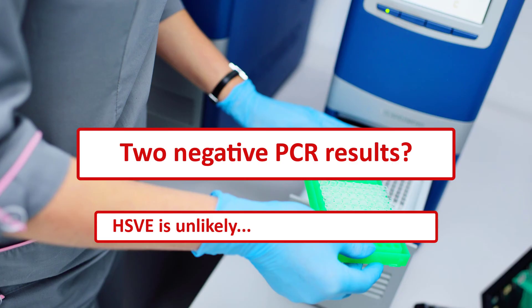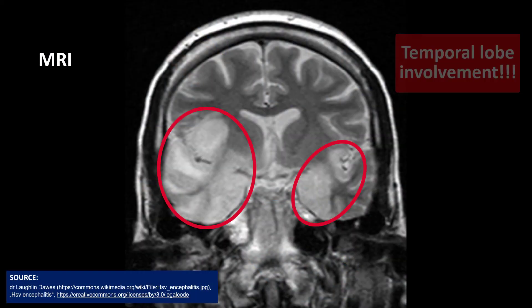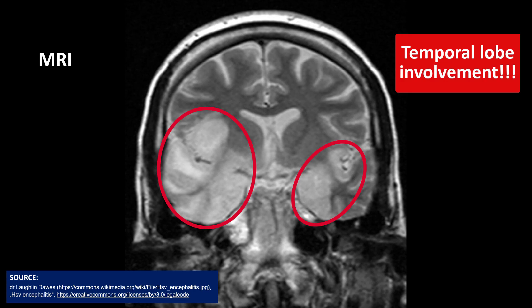But keep in mind that even a second negative PCR does not exclude herpes simplex with 100% certainty. So if the clinical presentation and imaging findings just scream herpes simplex, you should continue acyclovir and, when in doubt, consult your friendly neighborhood infectious disease specialist. I've included several research articles in the description of this video where you can find a more detailed explanation.